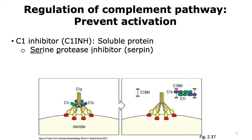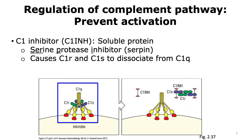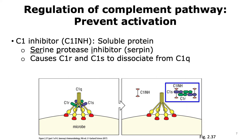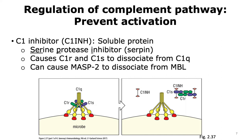One way to deactivate the complement pathways is to prevent their activation in the first place. Host cells make a protein called the C1 inhibitor, which is a soluble protein belonging to the serine protease inhibitor family, or the serpin family. The C1 inhibitor targets the complement C1 protein, which plays an important role in activation of the classical pathway. It causes C1R and C1S associated with C1Q to dissociate, so that C1Q cannot initiate the complement pathway. Similarly, the C1 inhibitor can also cause the MASP proteases to dissociate from mannose-binding lectin, thereby disabling the lectin pathway.